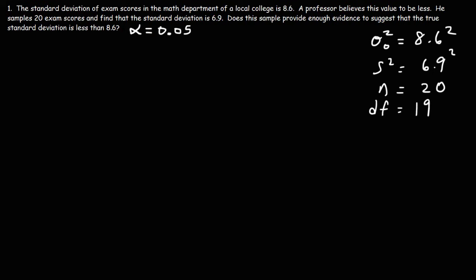The next thing we need to do is write the null hypothesis and the alternative hypothesis. For the null hypothesis, we could say that the variance is believed to be 8.6 squared.